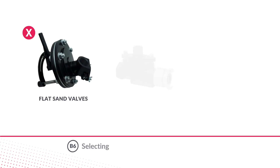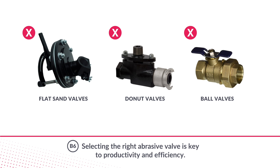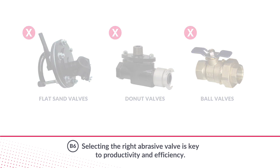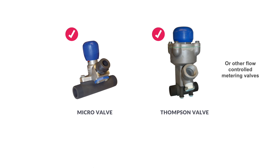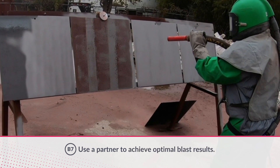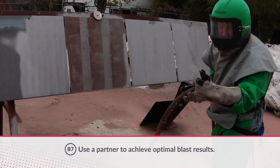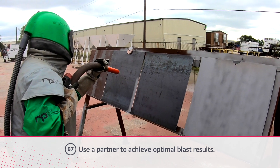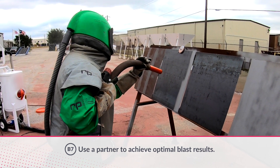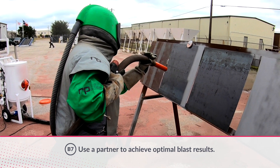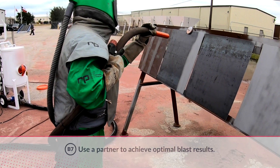Having the right abrasive metering can help reduce garnet consumption rate. The older flat sand valves, donut valves, and ball valves do not provide precise adjustments to control the abrasive flow. The use of a micro valve or Thompson valve will facilitate more accurate abrasive metering, resulting in reduced consumption, improved productivity, and higher efficiency. Have a separate person adjusting the metering valve in line with the blaster's instructions. While blasting the surface, move the nozzle to determine whether your cleaning rate is acceptable. When using GMA garnet, the abrasive exiting the nozzle should be almost invisible if the blast equipment is correctly set up.